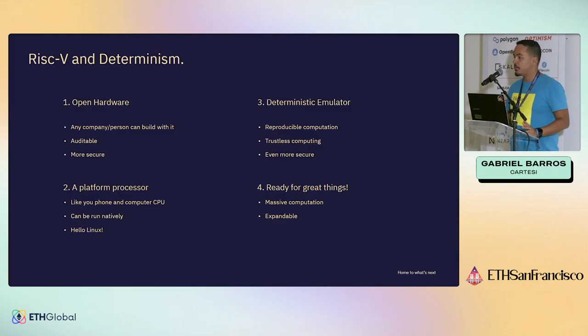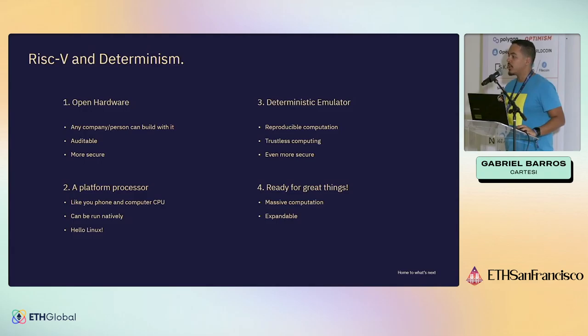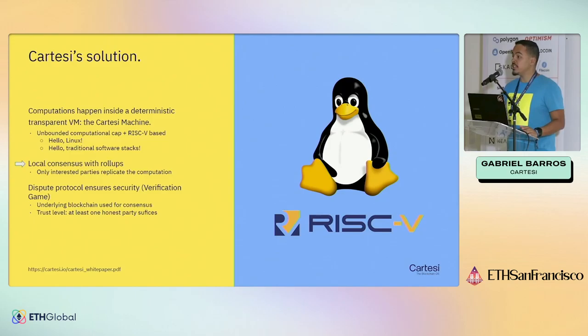RISC-V is open source — open hardware, to be more specific — so we got it from the community, made it deterministic, and applied it to blockchain. Any company or person can build on top of RISC-V. It's auditable and more secure because a lot of people have been working on it. It's a platform processor, so you can run an operating system inside it. That's why we were able to port Linux to the blockchain. Because it's a full machine, it's capable of massive computation and you can expand on it like any server application.